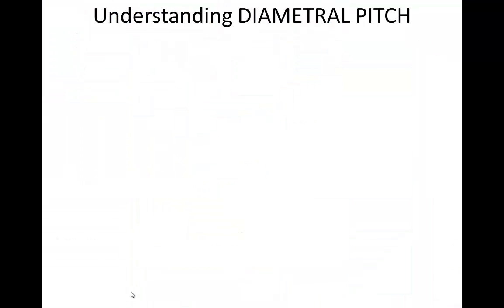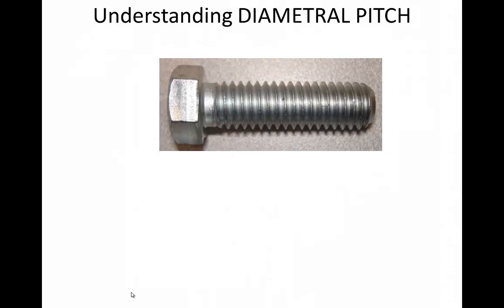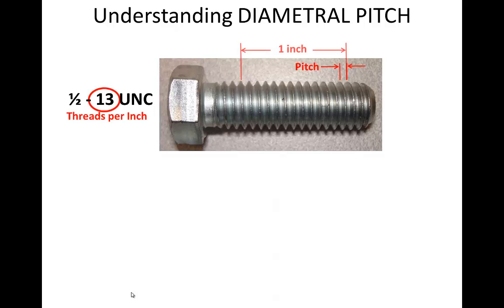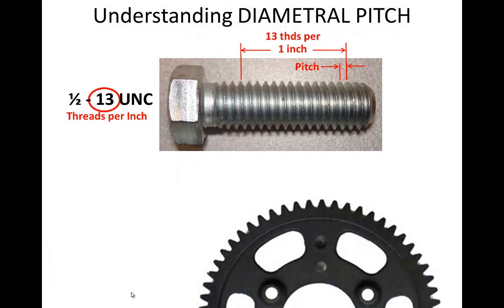But before discussing center distance, I want to help you understand diametral pitch. Remember when we talked about threads — the word pitch referred to the distance from one thread to the next. ANSI inch threads are specified where the number refers to the number of threads in 1 inch of length. Similarly, the distance from one gear tooth to the next is the pitch — we call it the circular pitch because the distance is an arc rather than a straight line. We can also measure 1 inch of circular length and count how many teeth are in that distance, just like we did with threads.